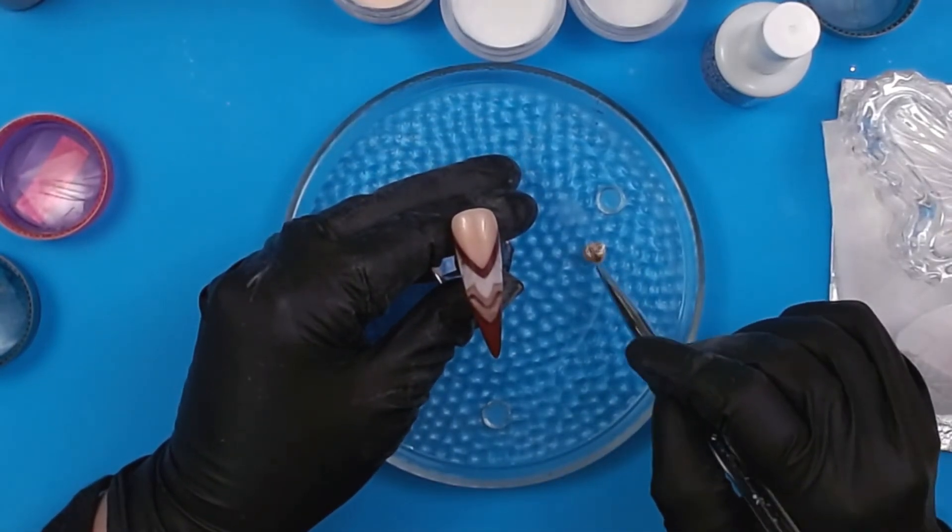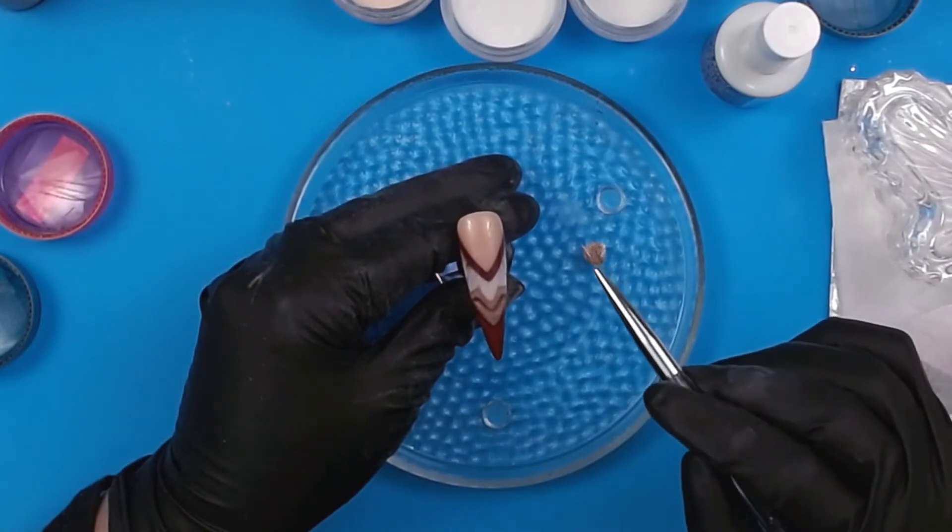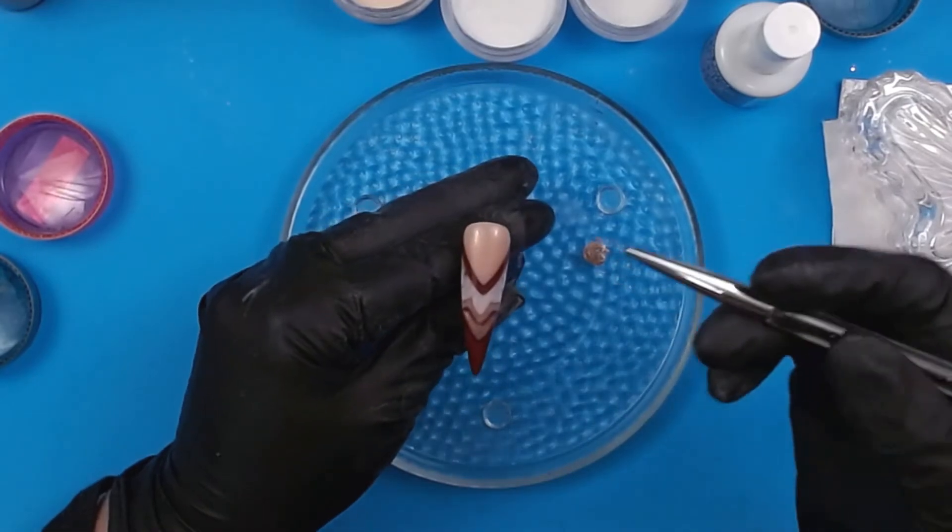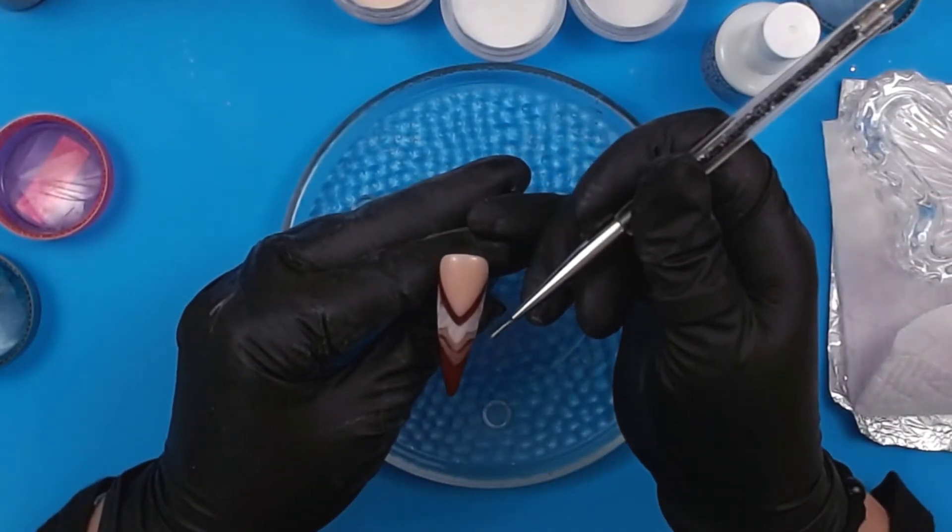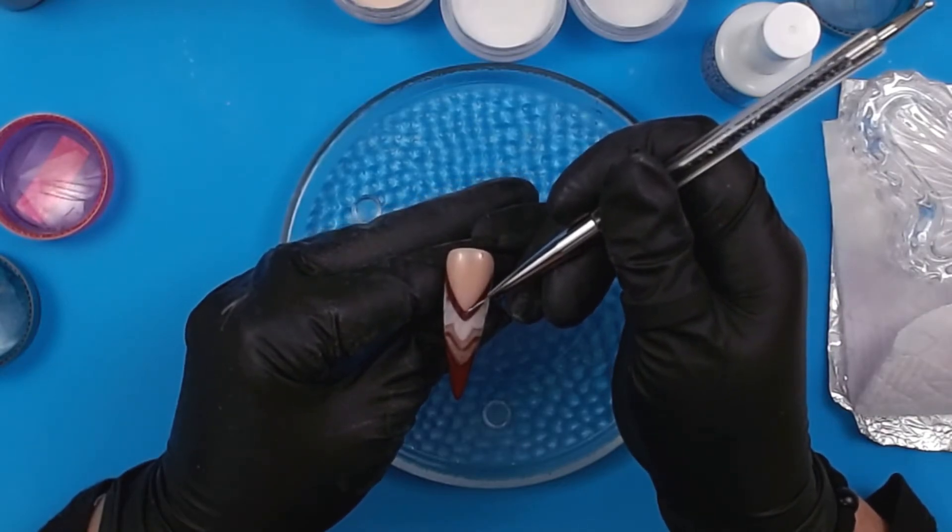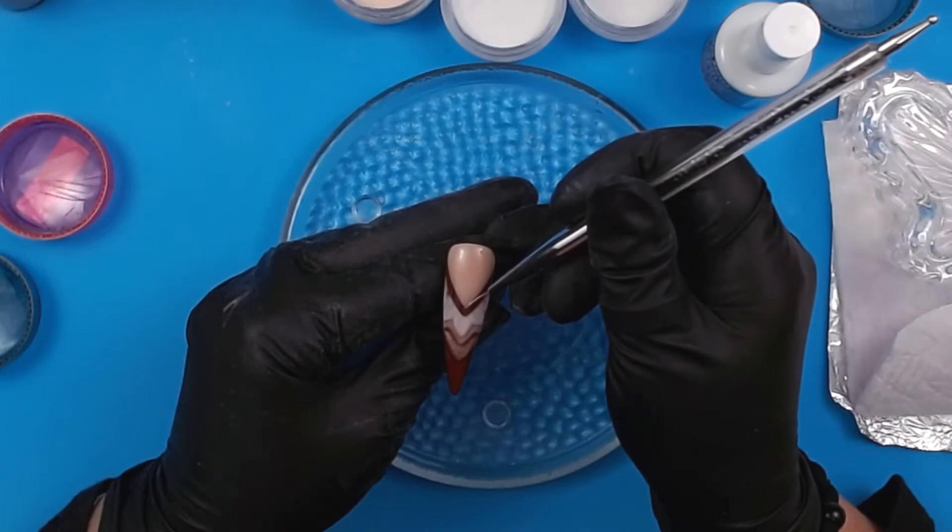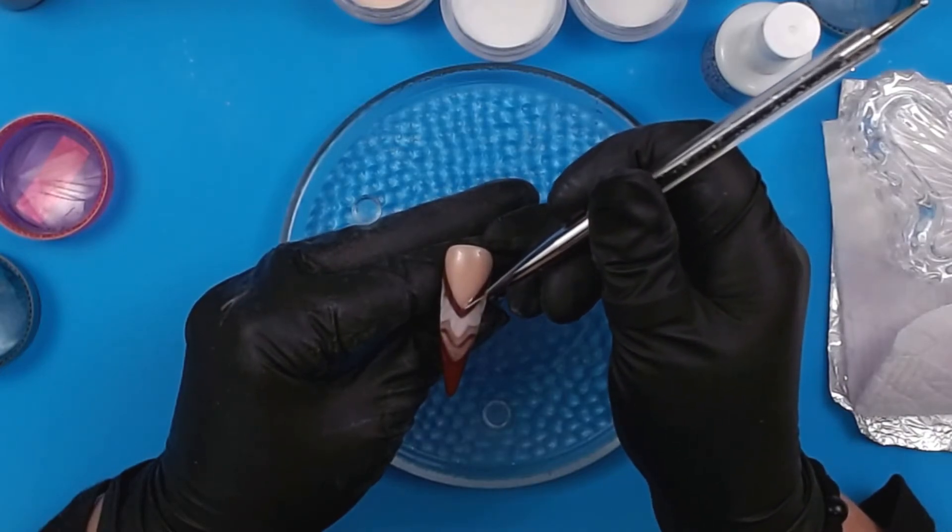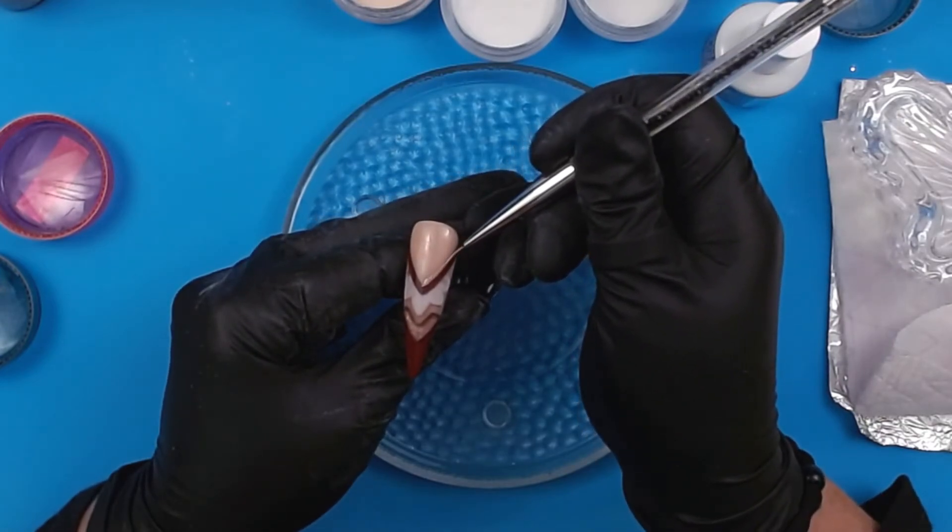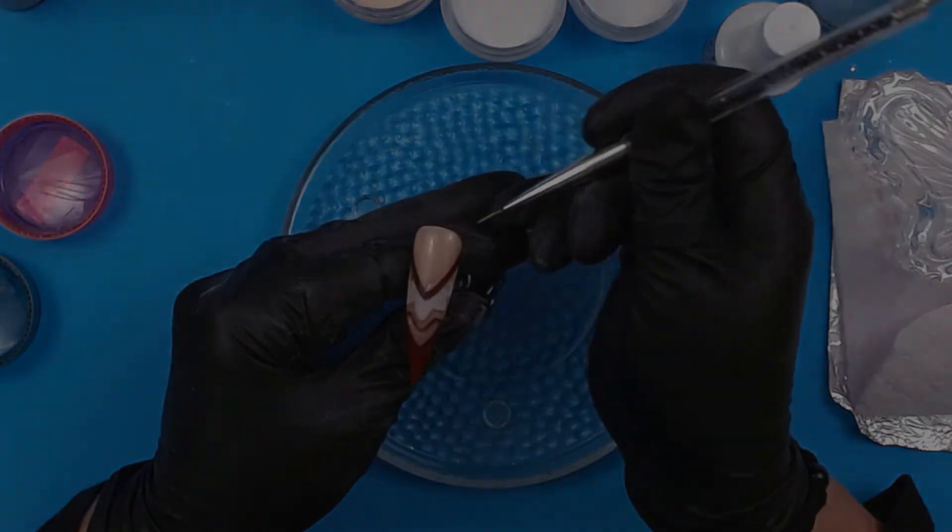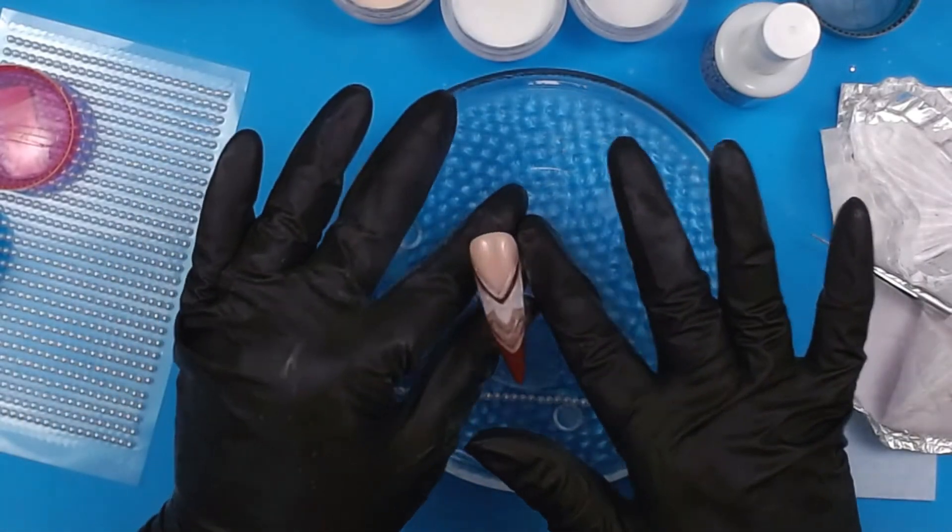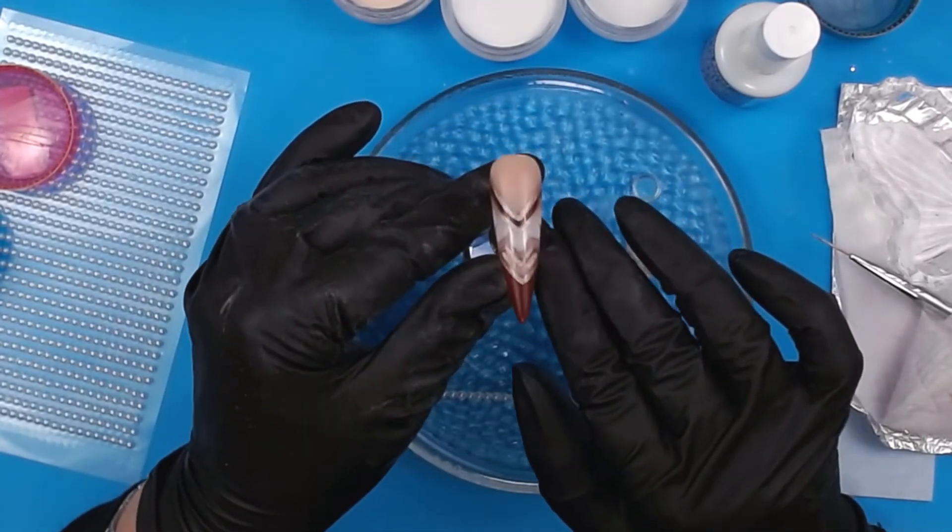This originally wasn't part of my plan to do this, but as long as there are options when you're not quite happy with the turnout of one thing or many things when you're creating a nail, you can always be creative. I don't want to say cover it up, but basically that is what I'm doing. And it turned out pretty good. I actually think it should have been part of my plan.